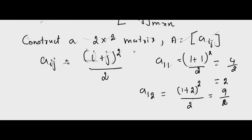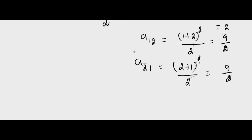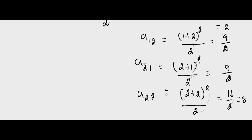A21 equals (2 plus 1) whole square divided by 2, which is 9 by 2. A22 equals (2 plus 2) whole square divided by 2, which is 16 by 2, equal to 8. So the matrix A is: 2, 9/2, 9/2, 8.